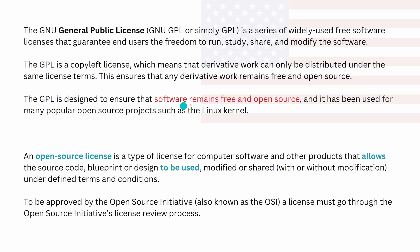GPL is designed to ensure that software remains free, and open source. It has been used for many popular open source projects — the Linux kernel, for example. An open source license is not so easy as you might guess, because it allows for source code blueprints designed to be used by other people. If you want a list of all open source licenses, there is an Open Source Initiative, or the OSI, and there you see all approved and regulated open source licenses.